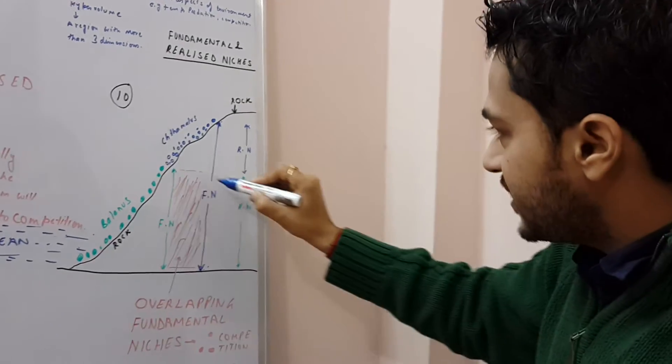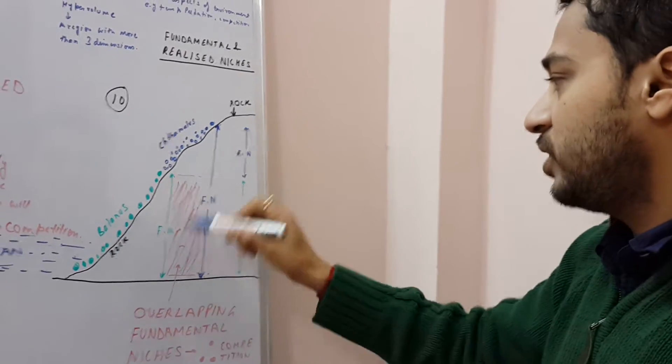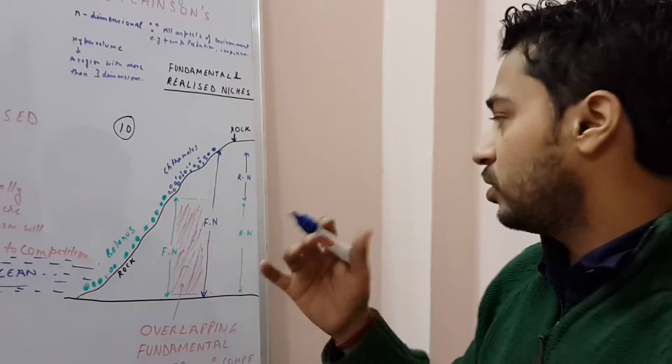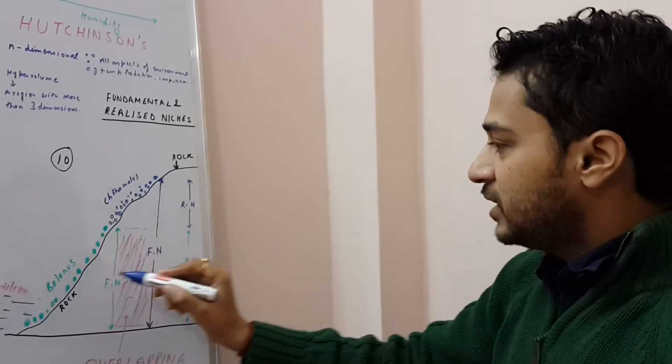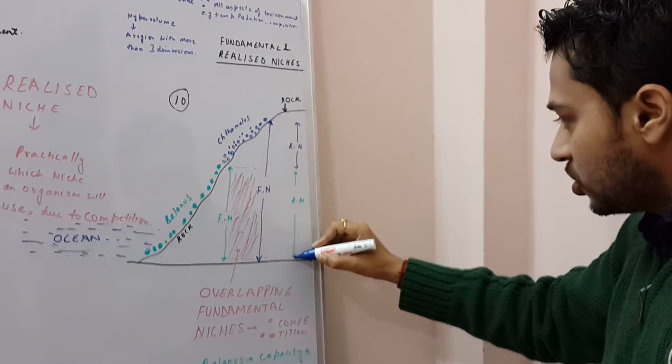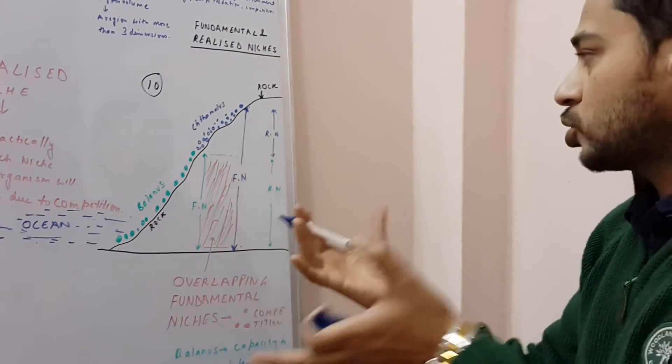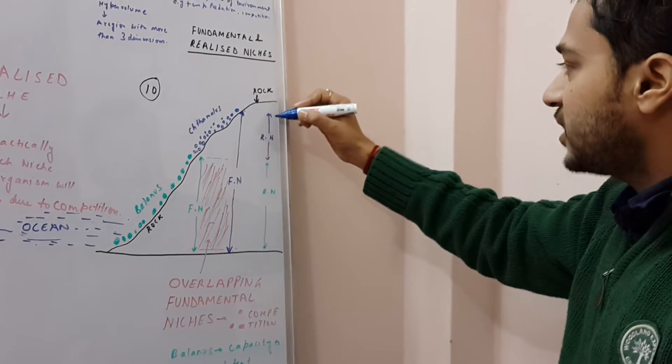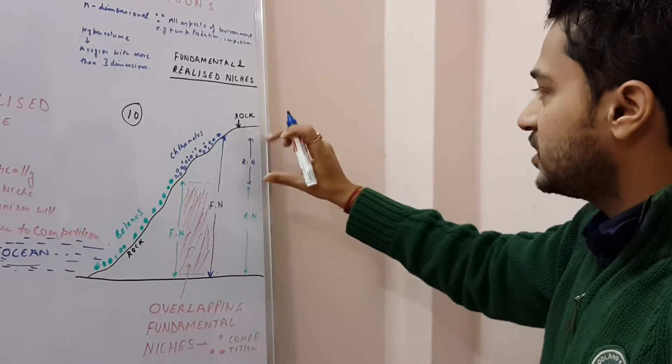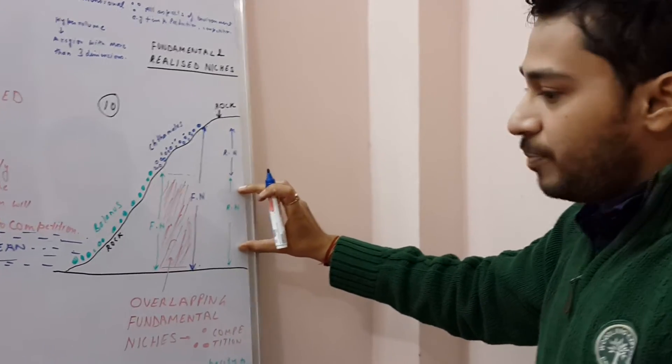But this area is an area where the two fundamental niches are overlapping, so there will be competition here. So ultimately one of them have to move out. And here the Balanus has occupied this region, so this has become the realized niche of the Balanus because it is somehow stronger. And the Chthamalus has remained only to this region. So this is the realized niche of Chthamalus and this is the realized niche of Balanus.